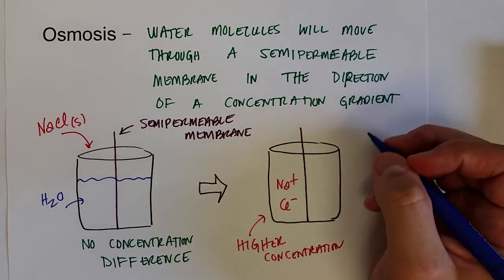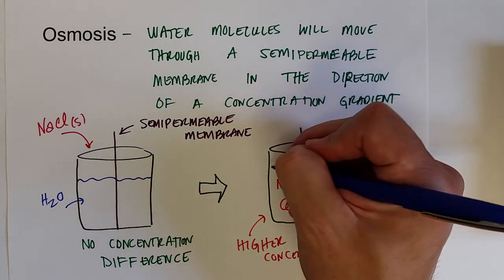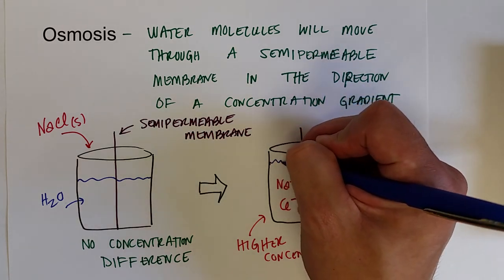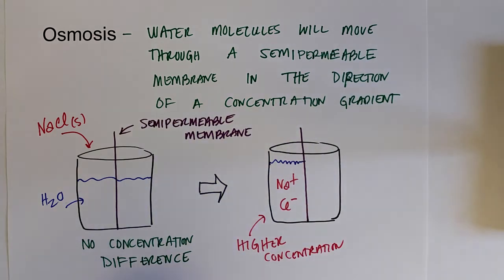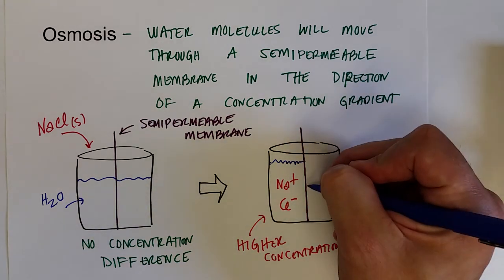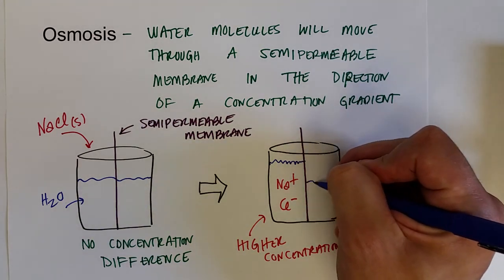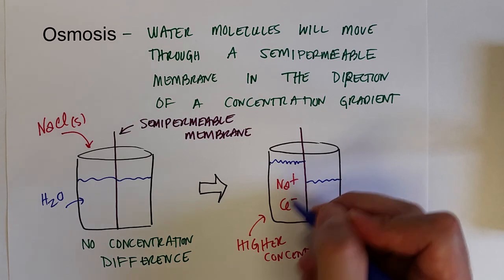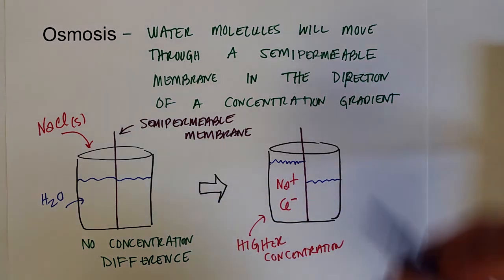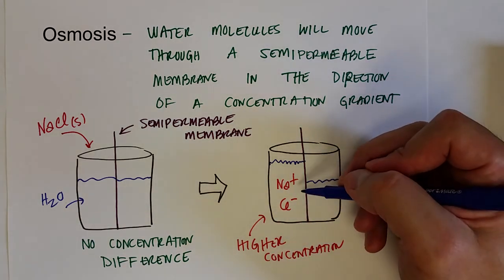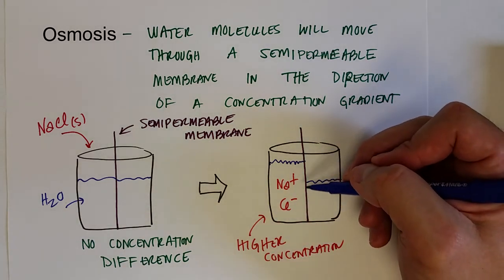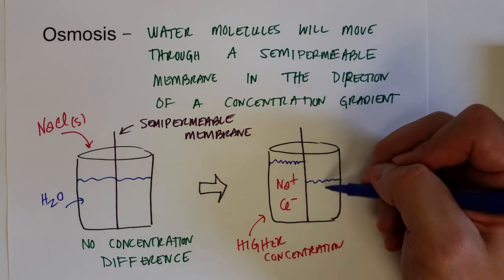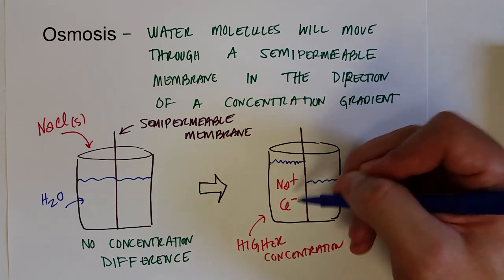Water flows from the right side to the left side to try to alleviate the concentration difference and lower the concentration of the sodium chloride. Over time, more water accumulates on the left side than the right side.